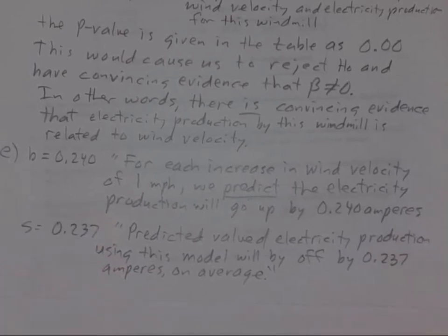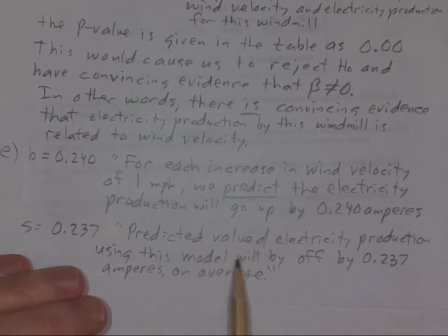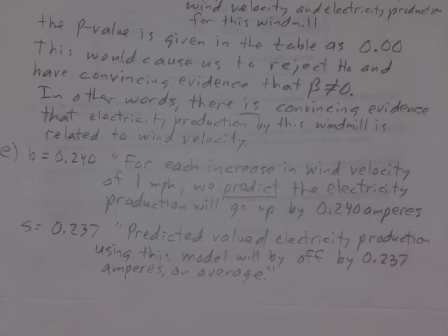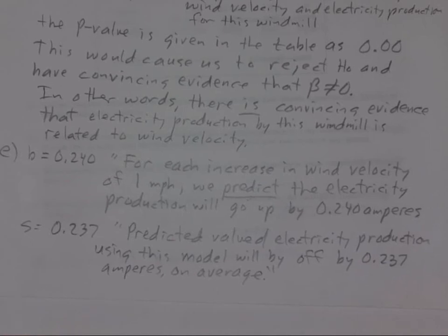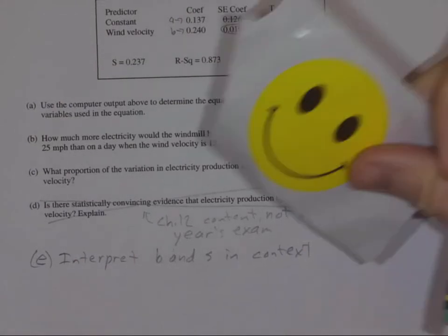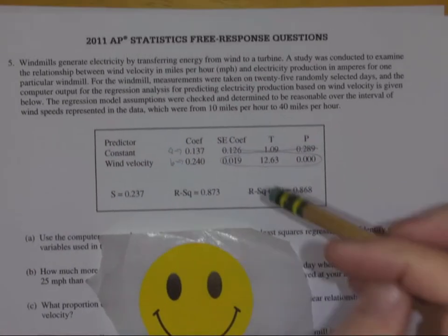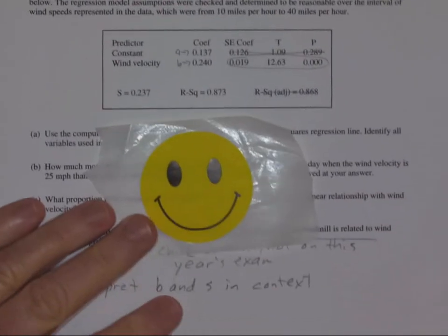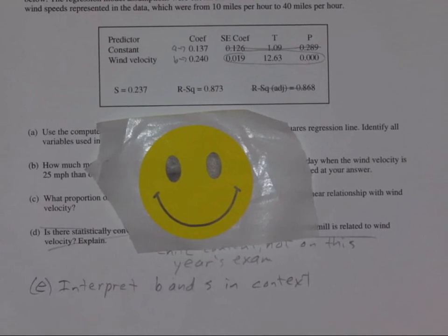S is the average amount our predictions are going to be off in essence. Predicted values of electricity production using this model will be off by 0.237 amperes on average. That's what S is. It is in essence the standard deviation of the residuals. But since the residuals add up to average zero, it's in essence the average of the residuals. There's your nice linear regression problem for the day. Appreciate you stopping by and watching this video. Tomorrow we will crank up the 2010 FRQs. I really miss seeing y'all. If you got any questions, please send them to me.